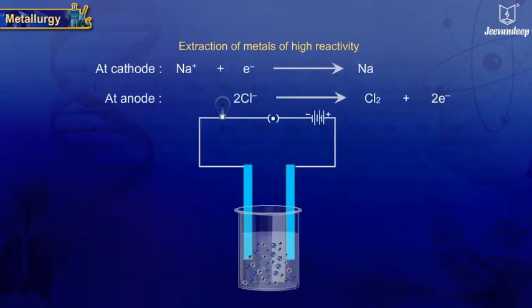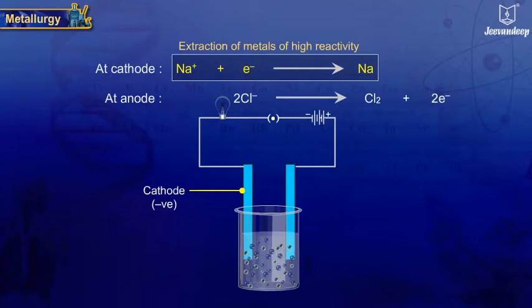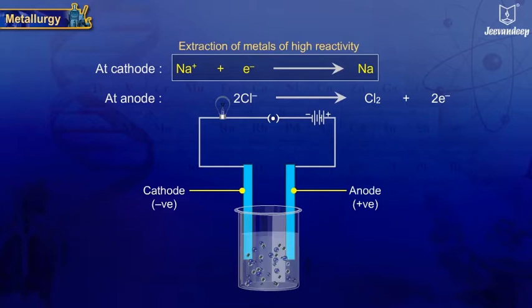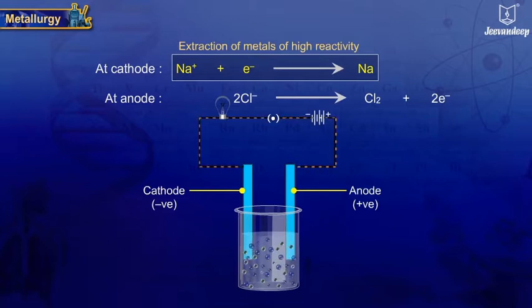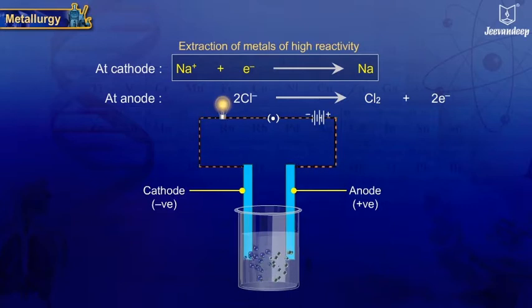Metals are deposited at the cathode, the negative electrode, and the respective anion is liberated at the anode, the positive electrode. For example, electrolysis of NaCl will give sodium at the cathode and chlorine at the anode.